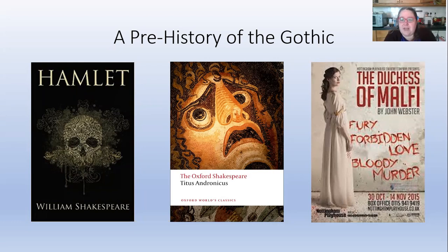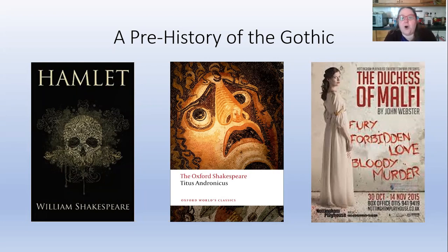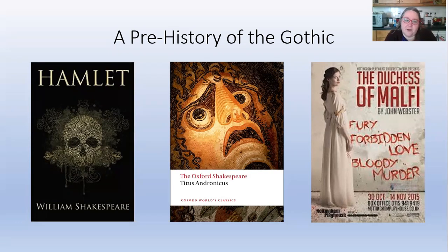Titus Andronicus is another interesting bit of pre-history of the Gothic, in part because of the terrible horrors of the Renaissance revenge tragedy — cannibalism, despair, murder, betrayal, sexual assault — all on stage. These horrors became part of the apparatus of the later Gothic, particularly what we think of as the horror novel. You also have here a precursor of the interesting re-evaluation and interaction with the term and concept of 'Gothic' itself.